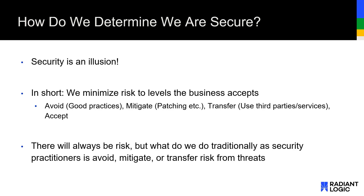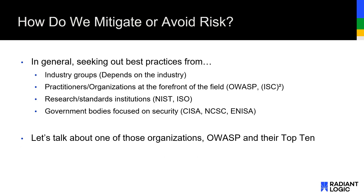Transferring risk means that the risk ceases to be managed by us directly, so let's focus on what we can manage: avoidance and mitigation. When we avoid or mitigate risk, we're looking to conform to best practices. For instance, we might avoid information disclosure risks by using modern TLS protocols — 1.2, 1.3 — and appropriate cipher suites. We might mitigate information disclosure risks by conforming to the principle of least privilege, such that if a privileged account is compromised, it can't get to everything on the system.